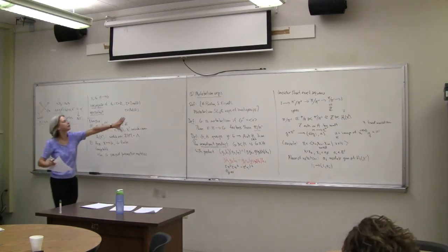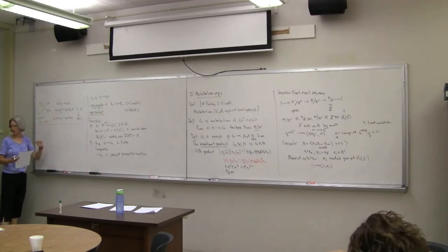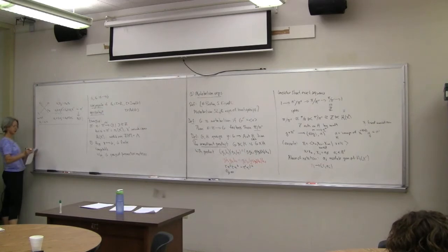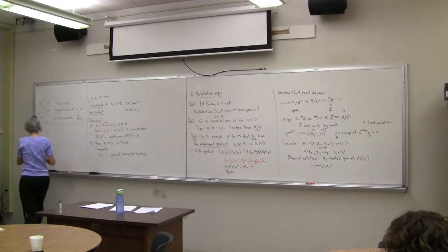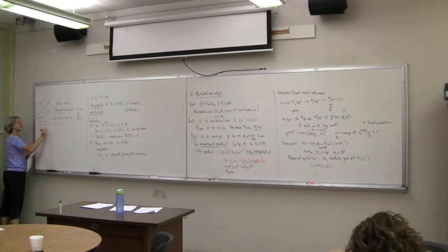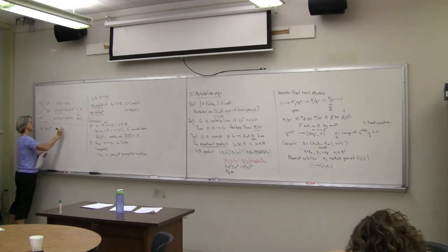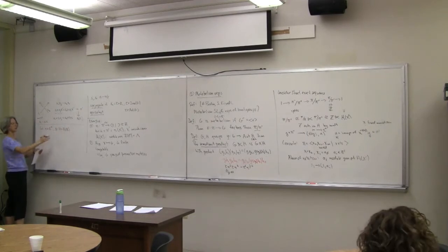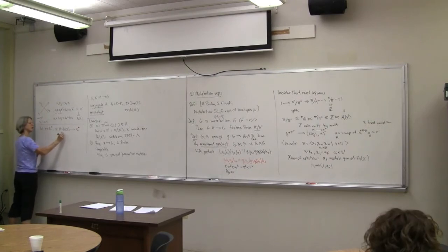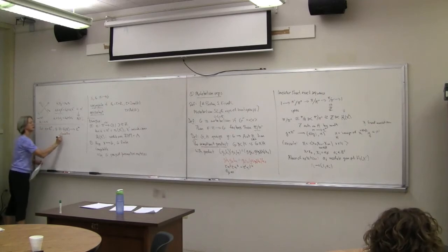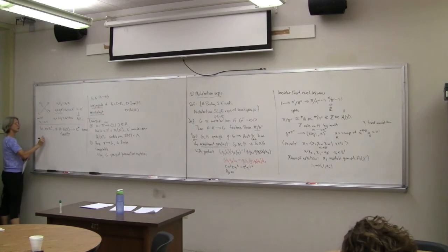With this background we want to figure out what the metabelian representations of the knot group look like. Boden and Friedl give a nice canonical form. I'm going to look at GL₂ℂ reps first and then say the form of SL₂ℂ. Let z be a nonzero complex number, and χ a homomorphism from H — which is H₁(X′) — into ℂ*. Such homomorphisms are usually known as characters.